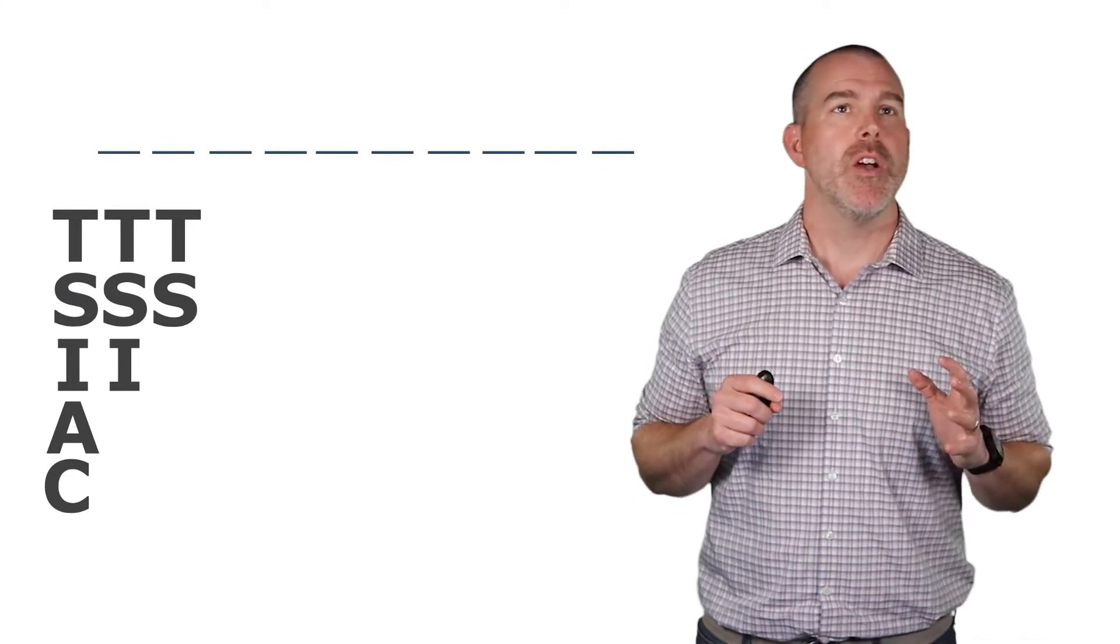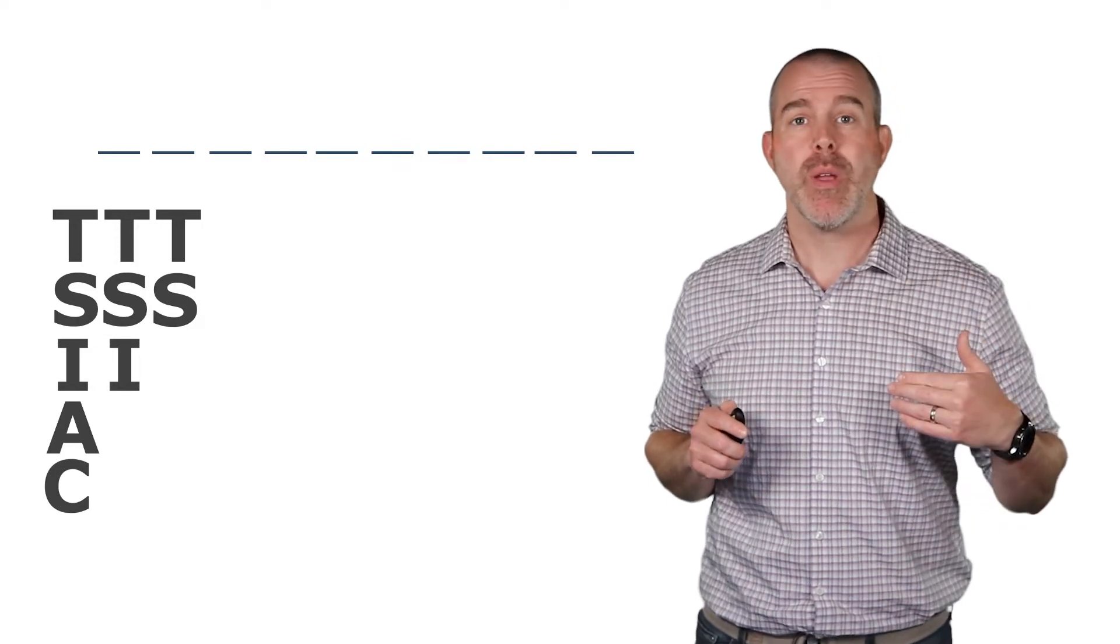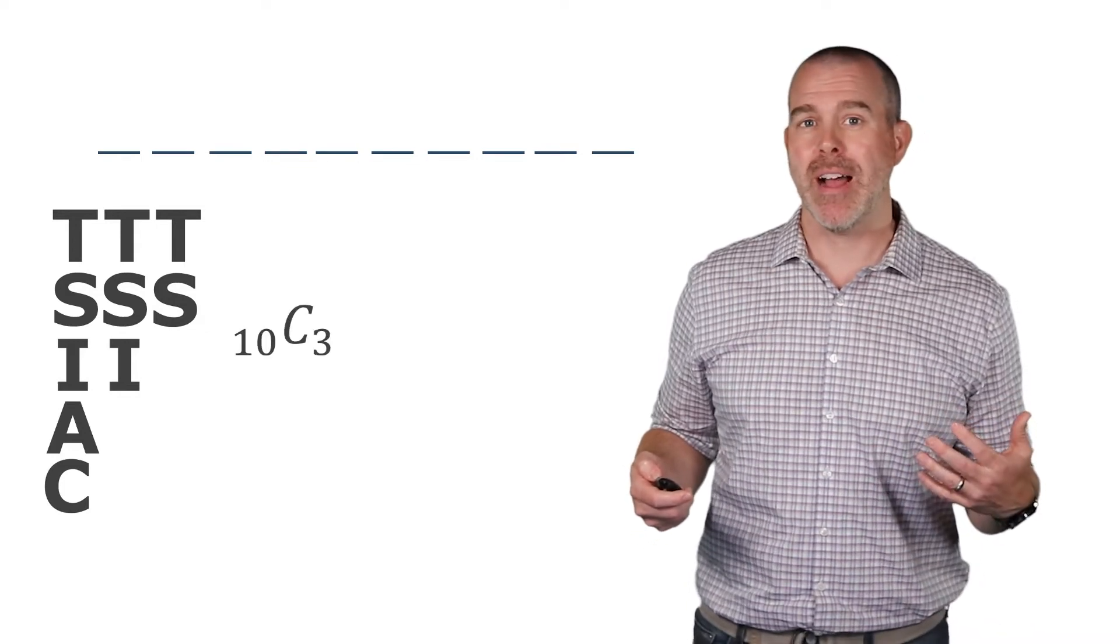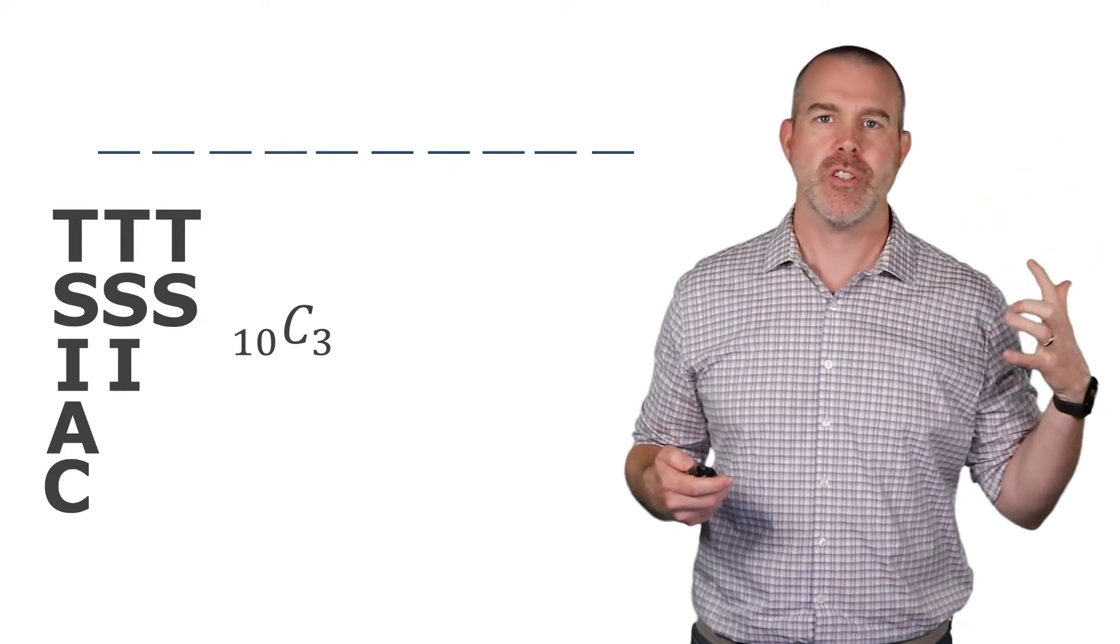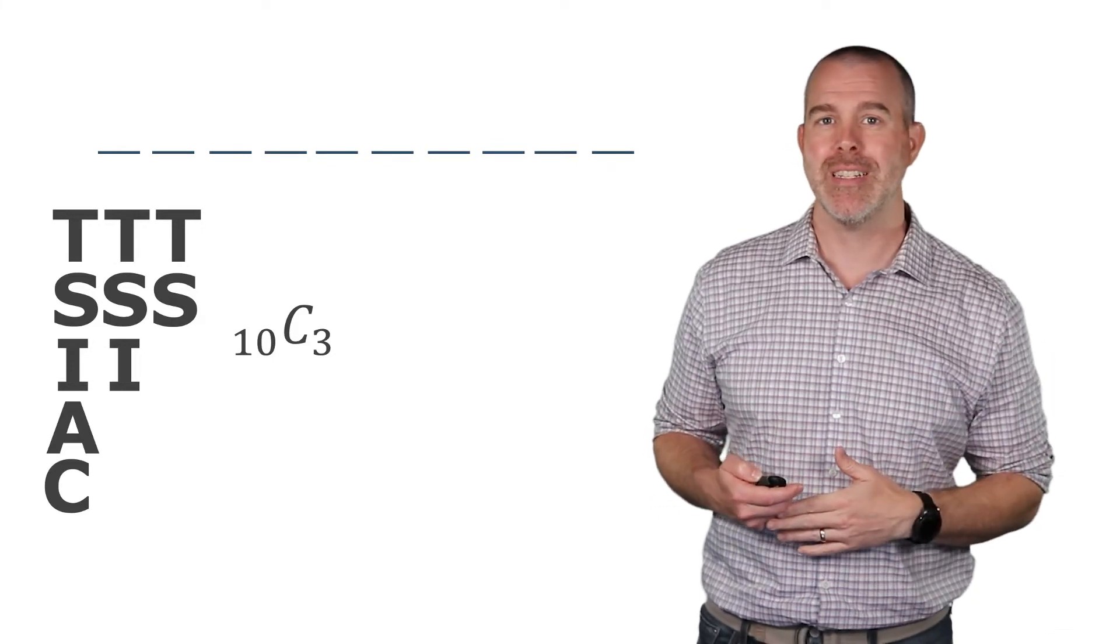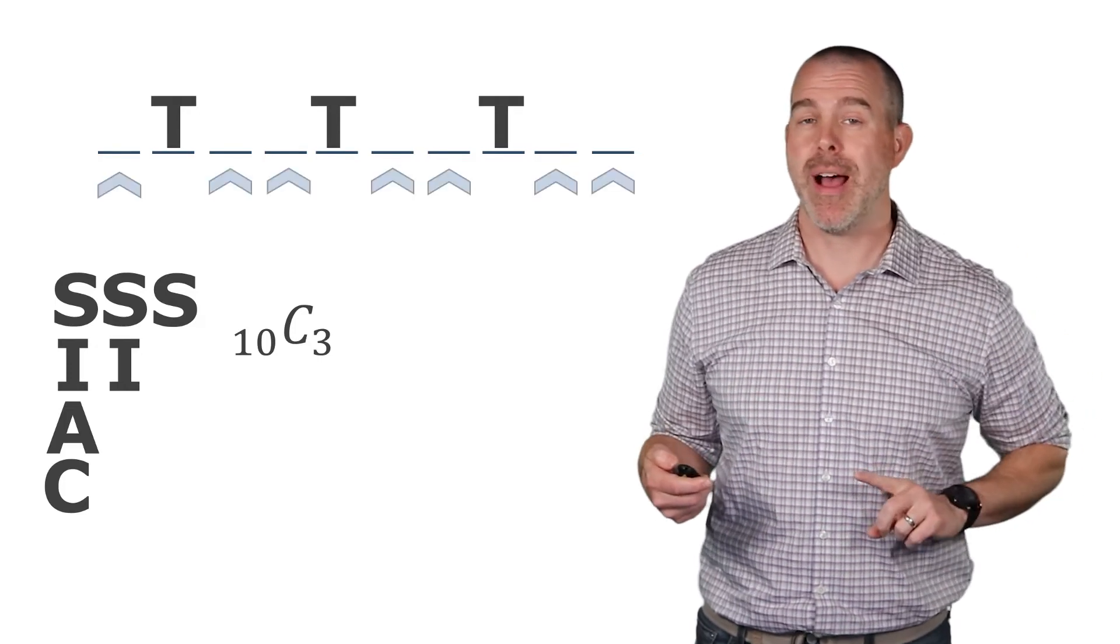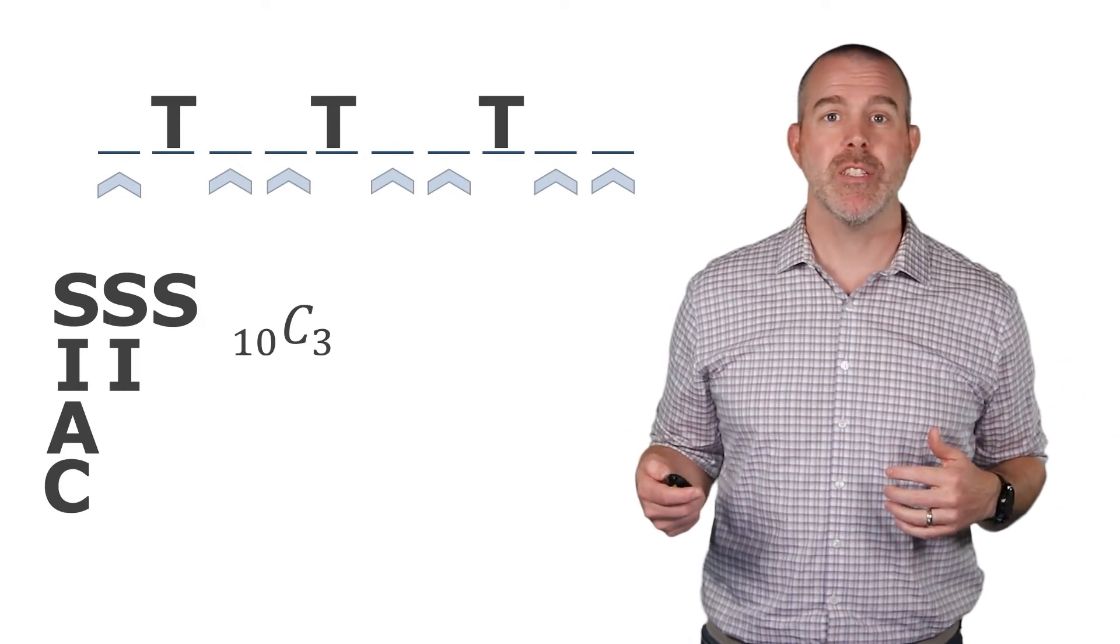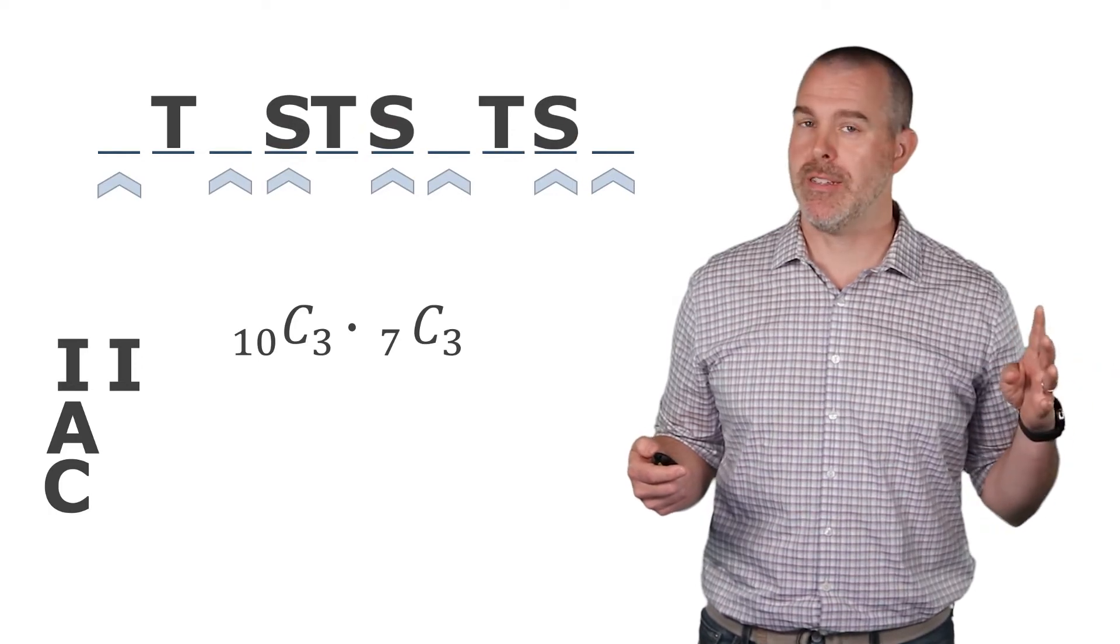What we could do is we could take those 10 spots and choose three of them to place the three Ts. So we have 10 spots. We're going to choose three of them. Now, where the three Ts are, it doesn't matter what order the Ts are, because they're just Ts. That's why this is a combination. So we're going to choose three spots out of the 10 to be the Ts. Let's say it ends up here. Okay, now we have seven spots left. From those seven, let's choose three spots to put the S's. How many spots? Seven minus three.